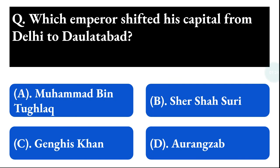Next question: which emperor shifted his capital from Delhi to Daulatabad? Option A: Muhammad bin Tughluq, option B: Sher Shah Suri, option C: Genghis Khan, option D: Aurangzeb. The correct answer is option A, that is Muhammad bin Tughluq.